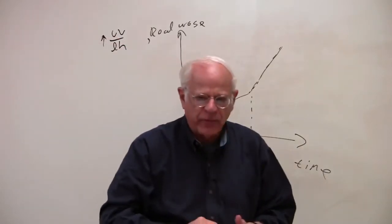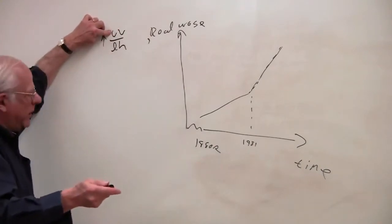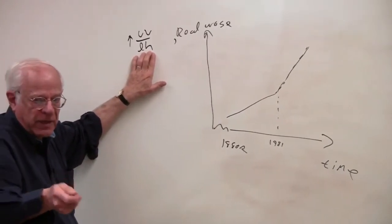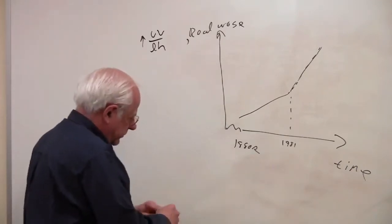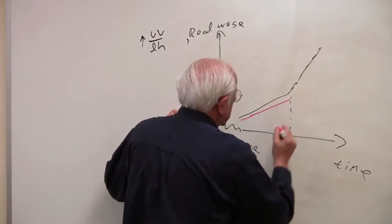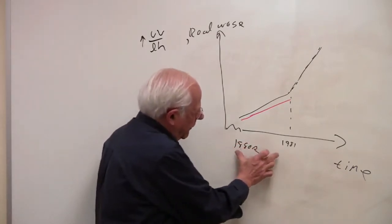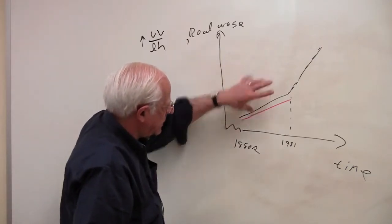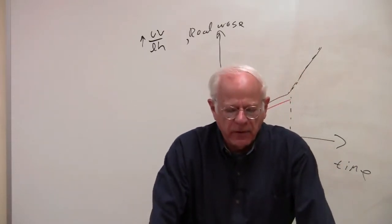Everything that Marx described in Volume 1 is reproduced around the world, and in this example reproduced in the United States — the productivity of labor rises. That's a great gain from capitalism. It develops, in Marxian language, the forces of production. The result is we get more wealth in the numerator with the same or even less labor power — that is, number of workers times the hours that they work.